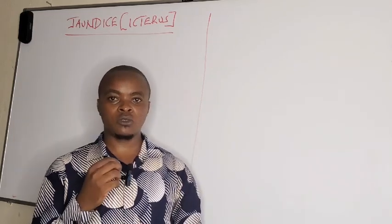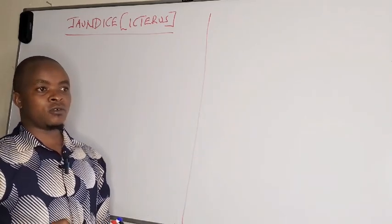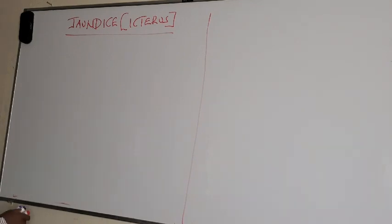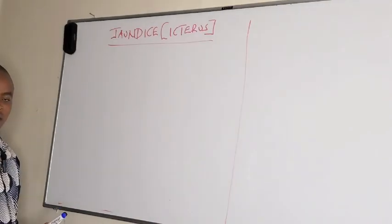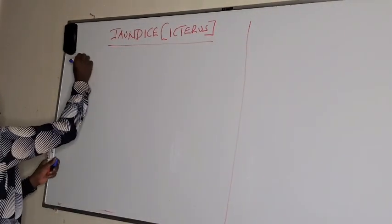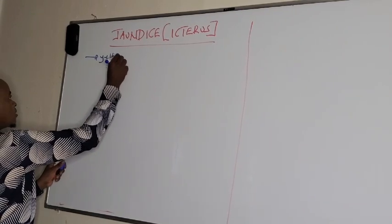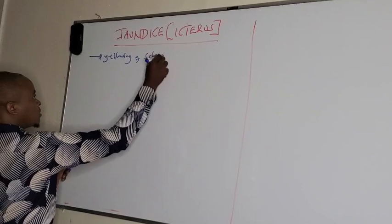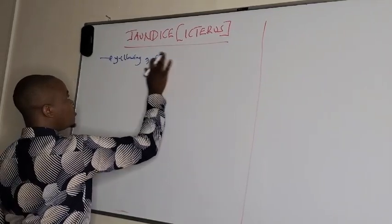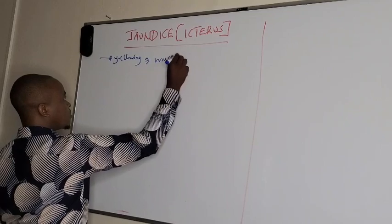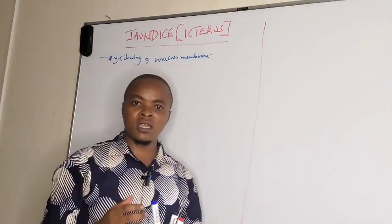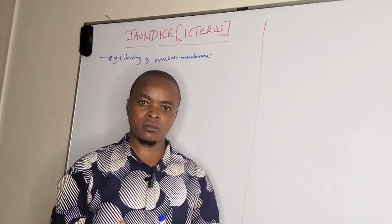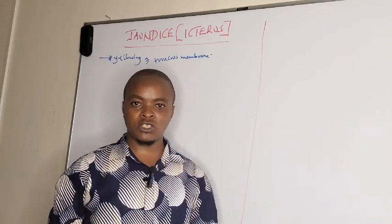Today we want to talk about jaundice, which is like a sign — you can also call it icterus. Jaundice is a symptom of hyperbilirubinemia, whereby jaundice is simply yellowing of the scleral membranes, or you can call them mucous membranes. Whenever someone has yellow eyes, yellow lips, very yellow urine, and sometimes even yellow skin, that is what we call jaundice.